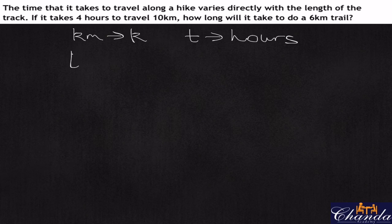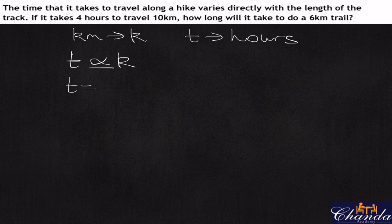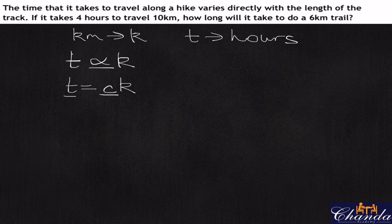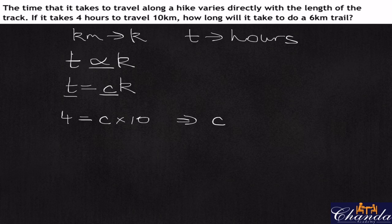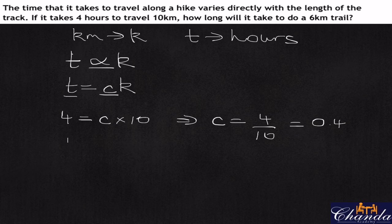The constant of proportionality appears once we remove the proportionality sign, so t equals ck, where c is the constant. We've been told the time is four hours when the kilometers is ten, so four equals c times ten. Therefore c equals four divided by ten, which is 0.4. Our formula is simply t equals 0.4k.